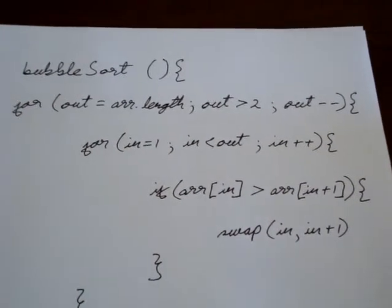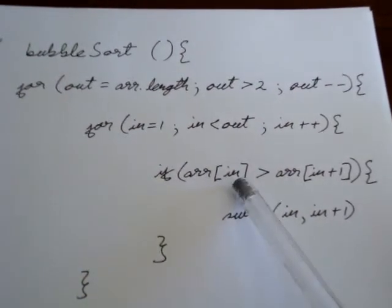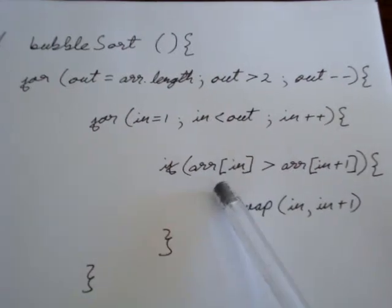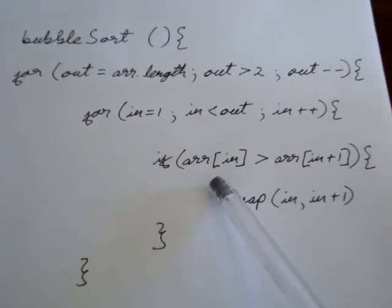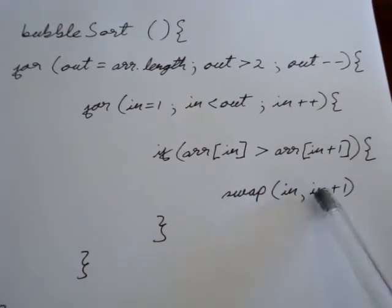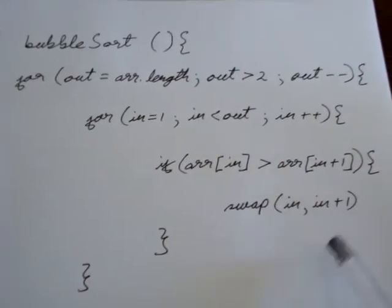We ask the question: if array[in] is greater than array[in+1], which means if the position that we are currently at for in is bigger than the position to the right, then we swap those two positions - in with in plus one. Once we complete that, we will end up being sorted.